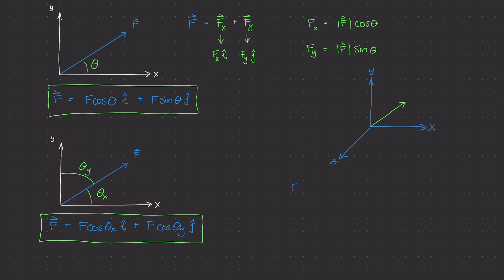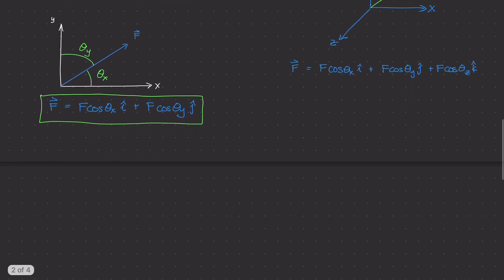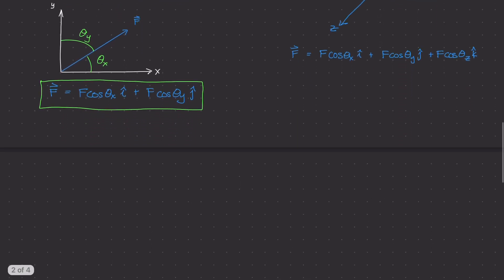In three-dimensional space, we simply add one more component: F = F·cos(theta_x)·i + F·cos(theta_y)·j + F·cos(theta_z)·k, where k is the unit vector pointing along the z-axis. The angles theta_x, theta_y, and theta_z are what's known as direction angles, and they are very useful when dealing with forces in three-dimensional space.